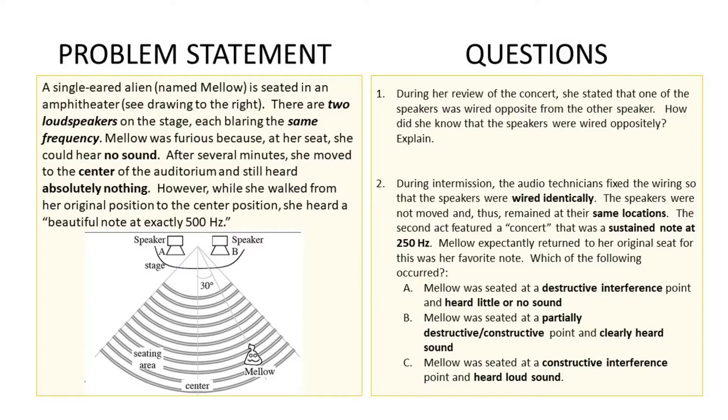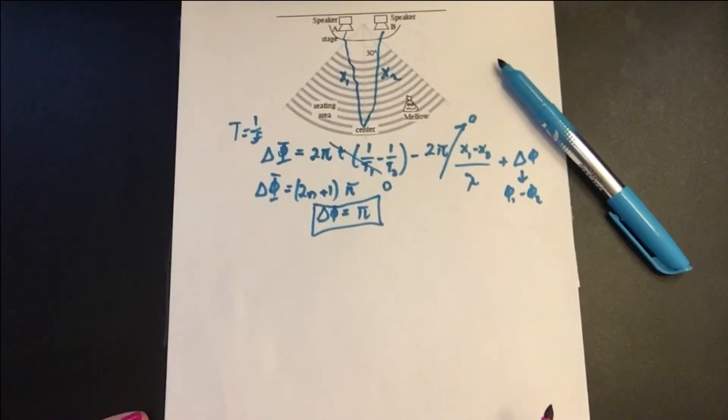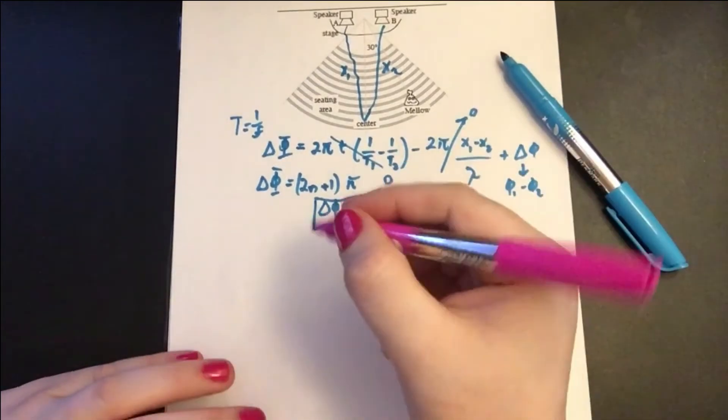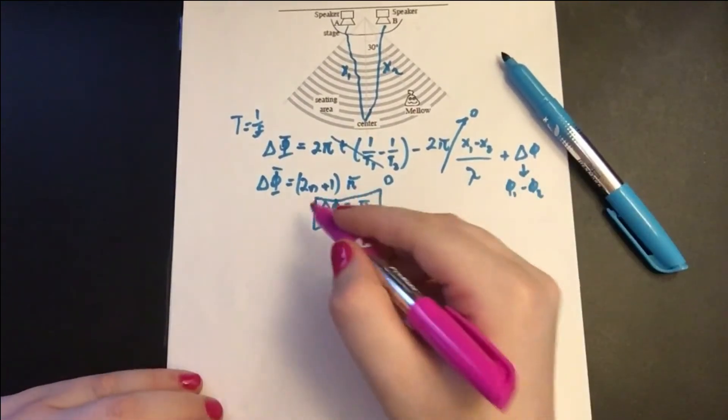Mello was seated at a destructive interference point and heard little or no sound. Mello was seated at a partially destructive constructive point and clearly heard sound. Mello was seated at a constructive interference point and heard a loud sound. Okay, so let's remember what the difference between each one is.